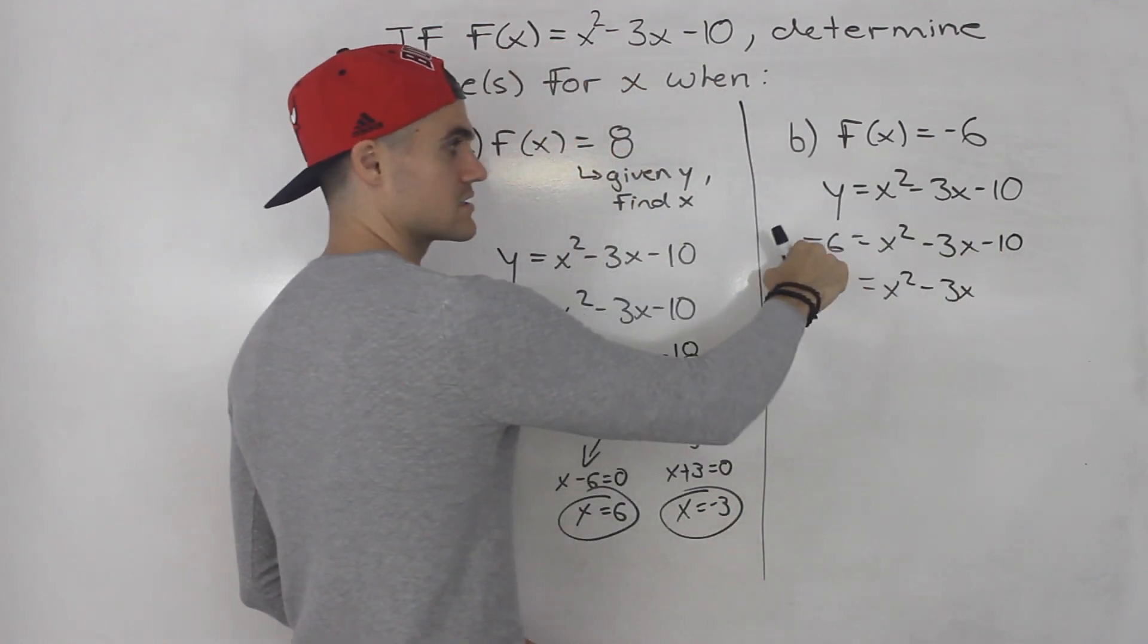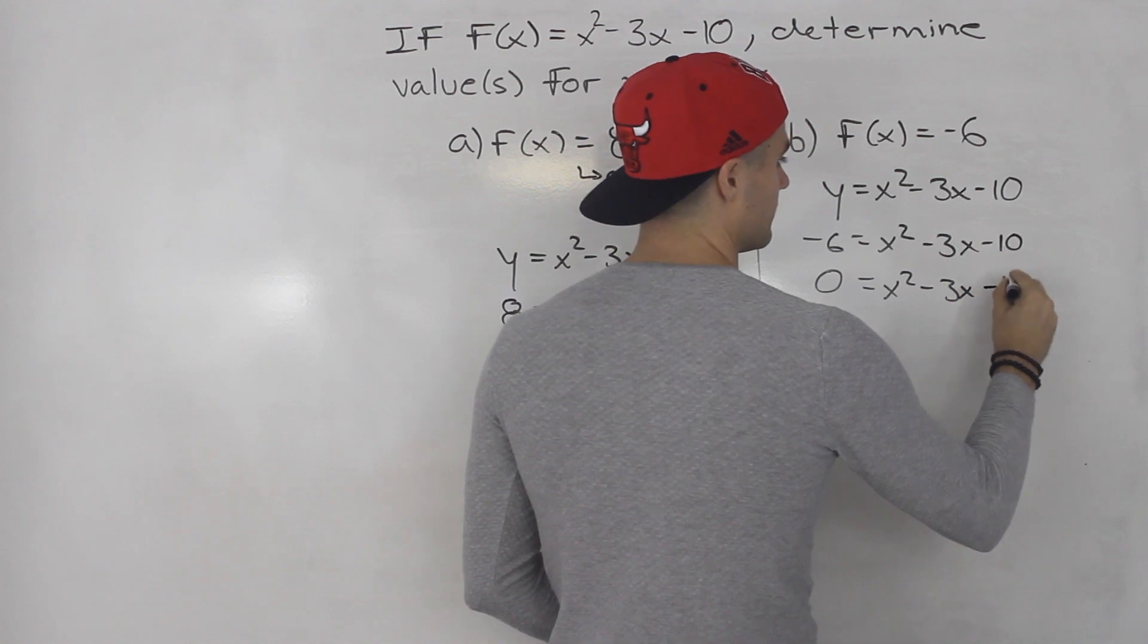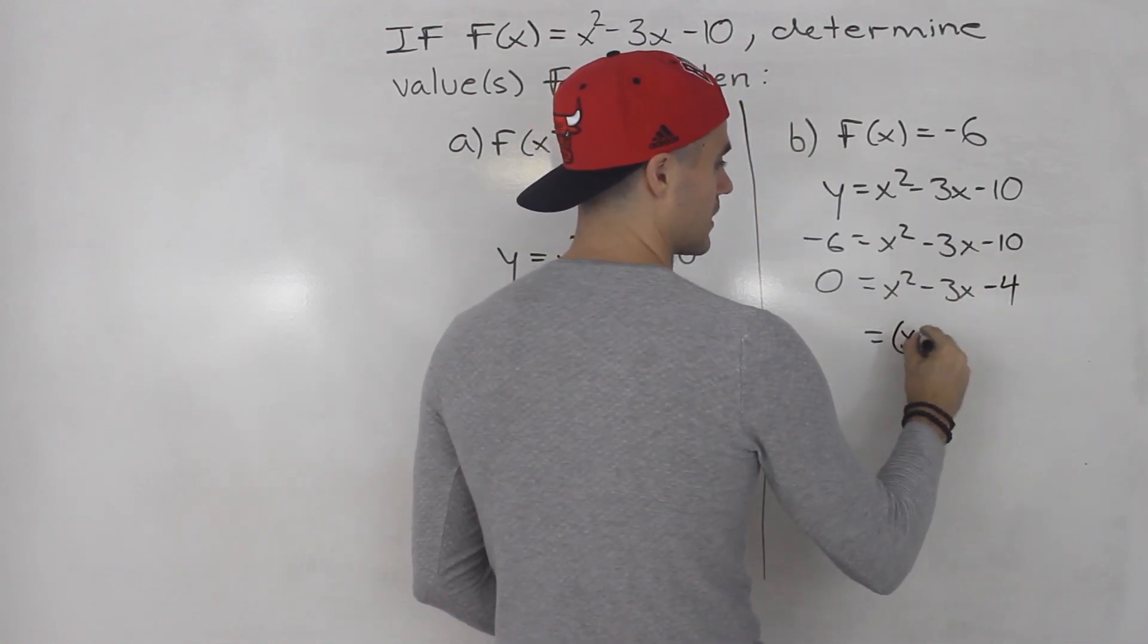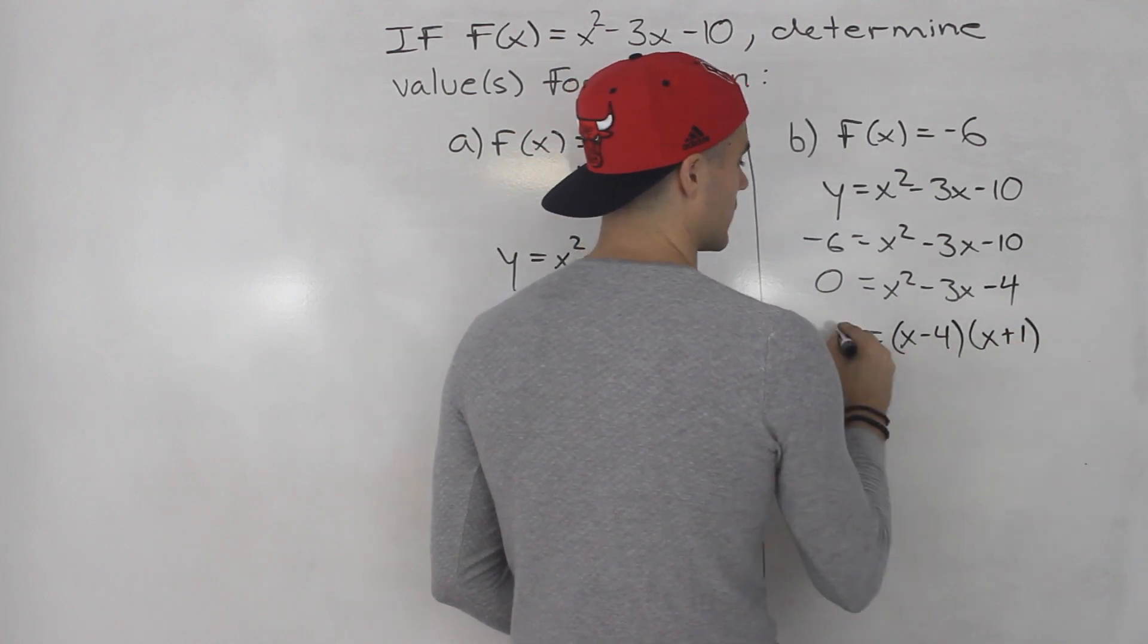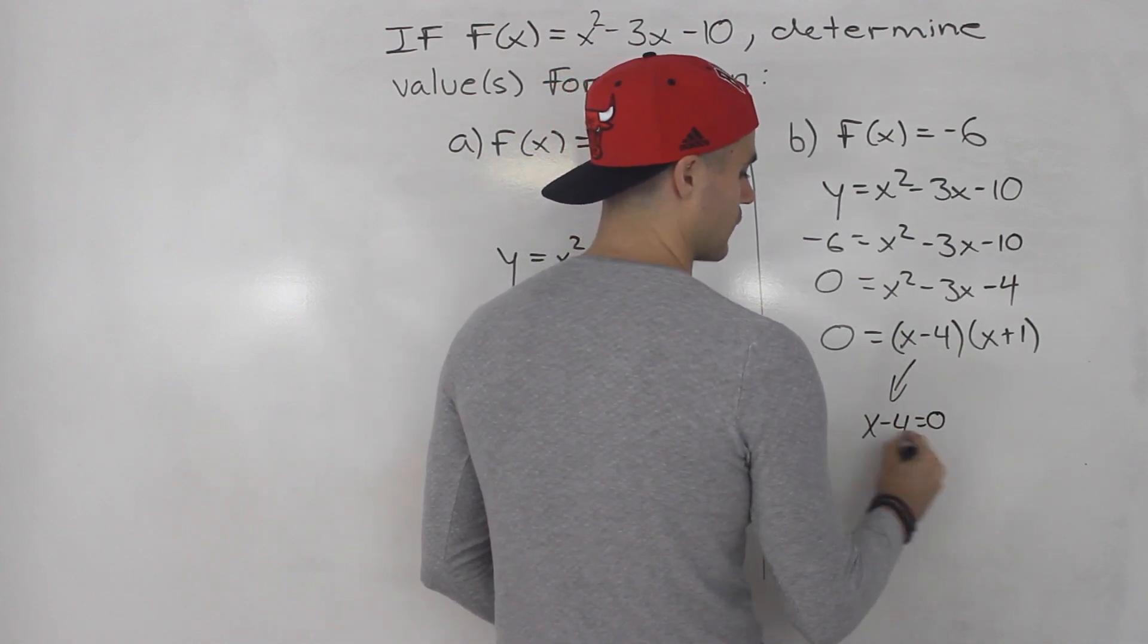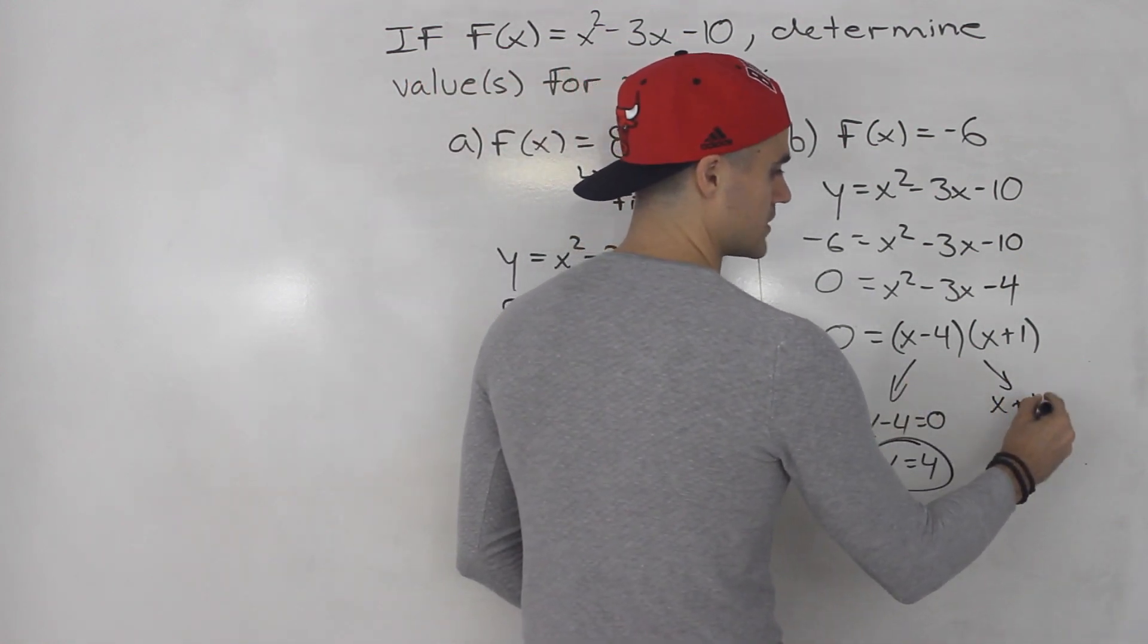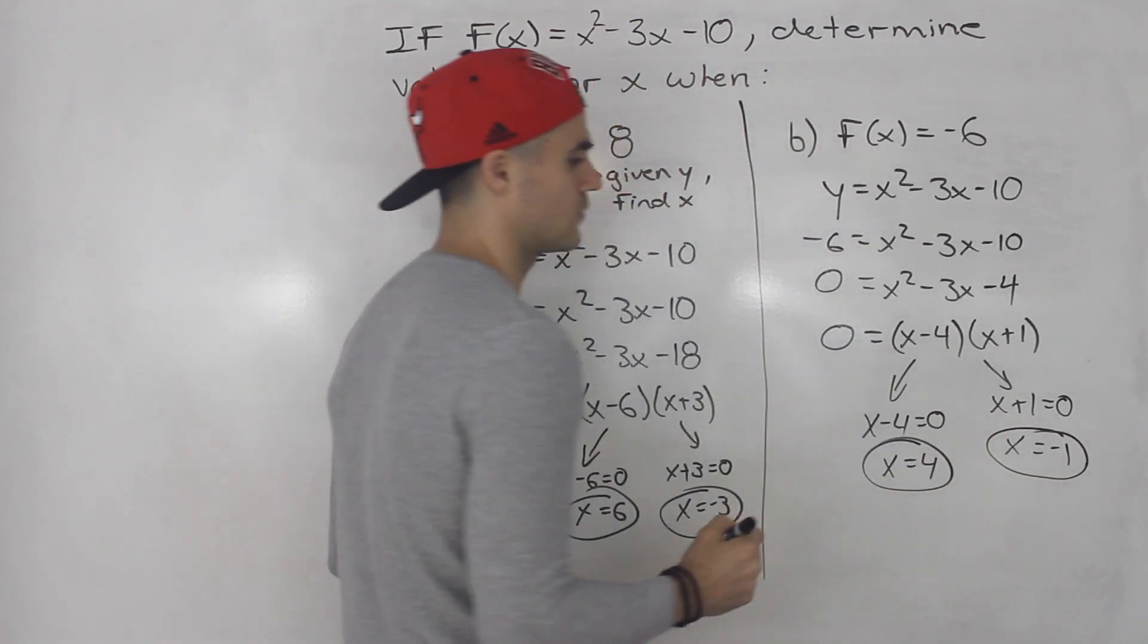So when you do that bring the -6 over. -10 plus 6, this turns into a positive 6 when you bring it over, is -4. And then this you could throw in the quadratic formula but it actually factors smoothly into (x - 4)(x + 1). So x - 4 equals 0 happens when x equals 4. And x + 1 equals 0 happens when x equals -1.